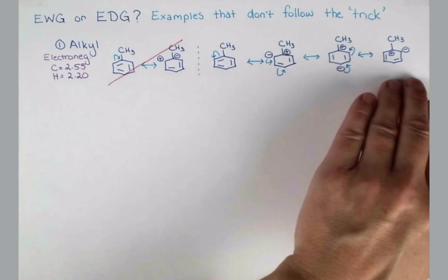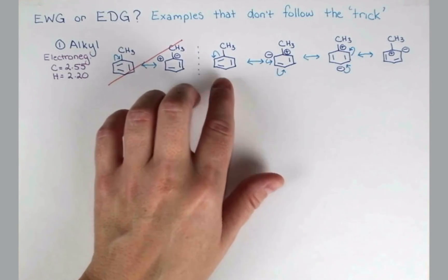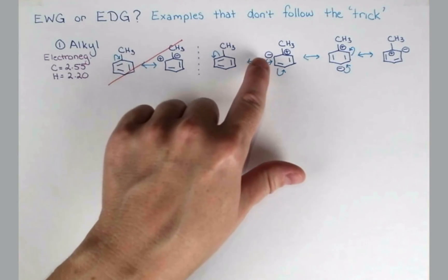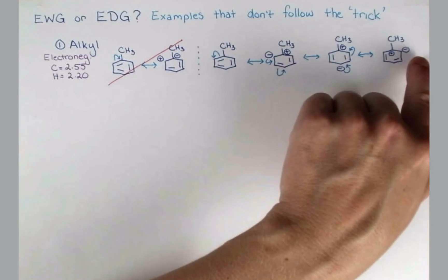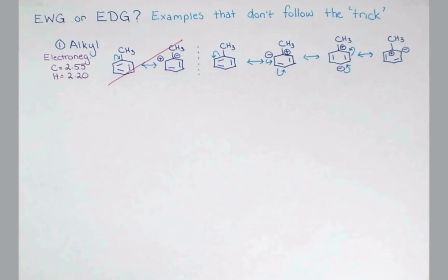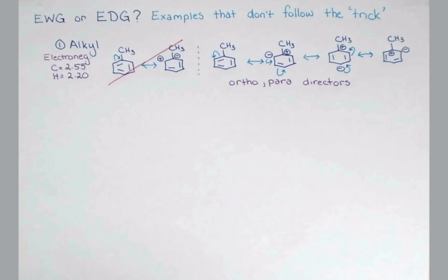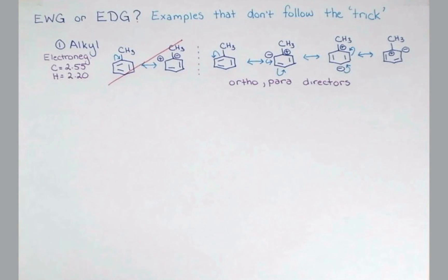Now, although these resonance forms don't contribute as much as this one that's not charge separated, they do contribute. And so the most electron-rich positions are here, here, and here. So from this analysis, we can say that alkyl groups are ortho-para directors. But since carbon doesn't have a lone pair on it that it can push directly into the ring or anything like that, they are weak activators of the ring.